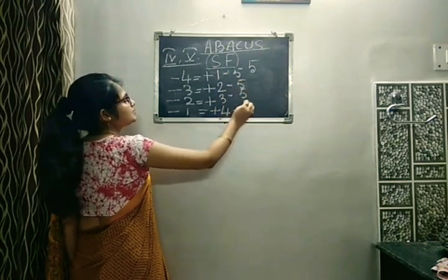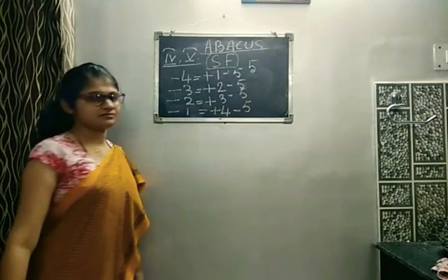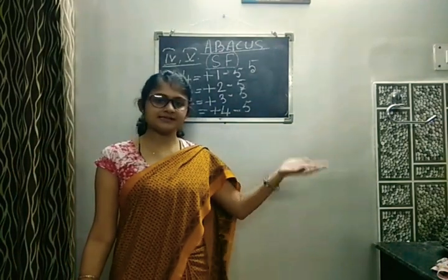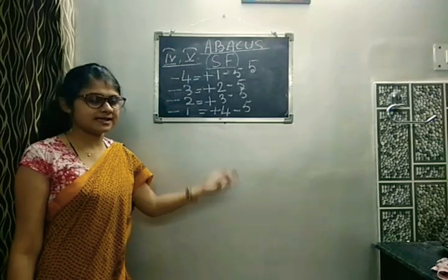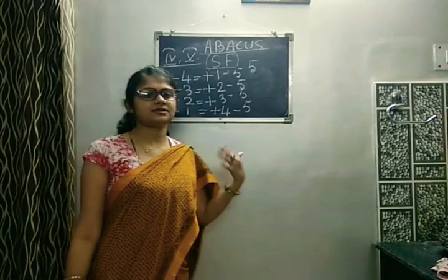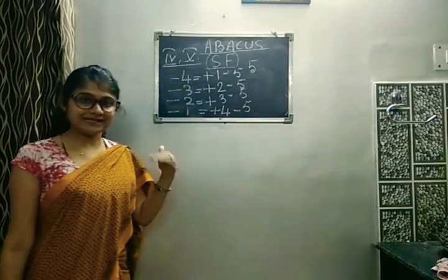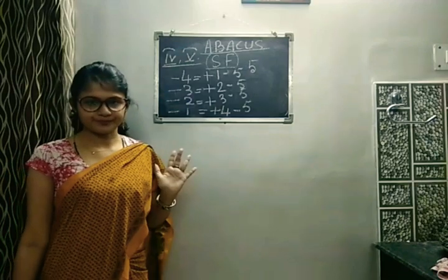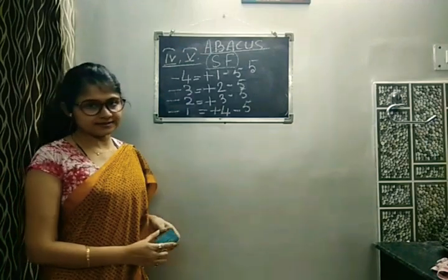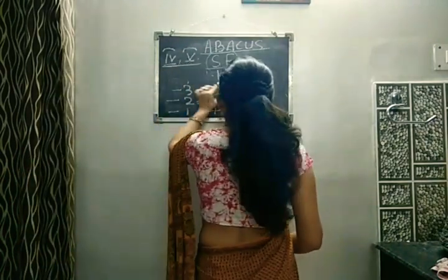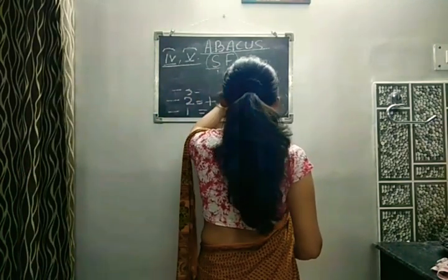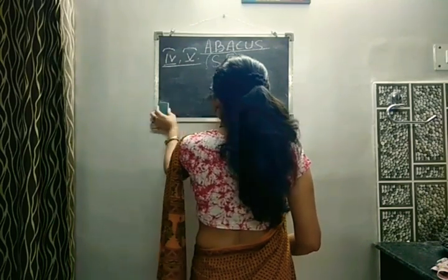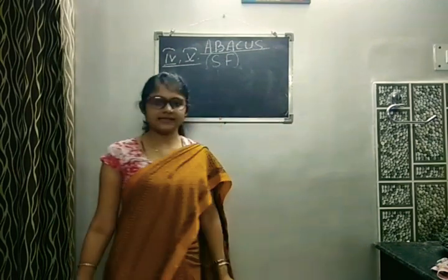When you talk about 50, meaning the tens place — 10, 20, 30, 40, 50, 60, 70, 80, 90 — you do the same thing: add a zero to all the numbers. You use this formula when you cannot subtract the beads directly.